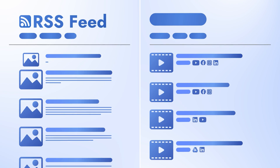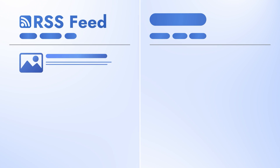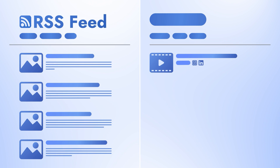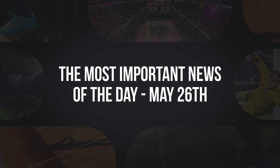This tutorial shows the creation of one video from one RSS item, but you can also pull data from several RSS items into one video — for example, if you want to do a video of the most important news of the day and include five articles in one video.